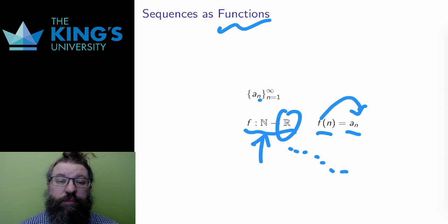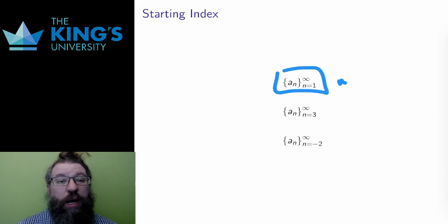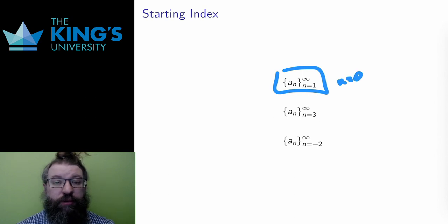Finally, one last note. The starting place for sequences is usually n equals 1 or n equals 0. However, it can be any starting point. If I want, I can start at n equals 3 or n equals negative 2, and I just still count up from that starting point.